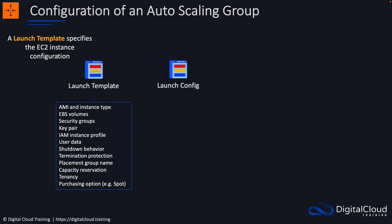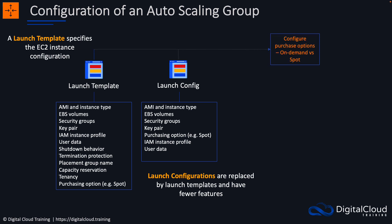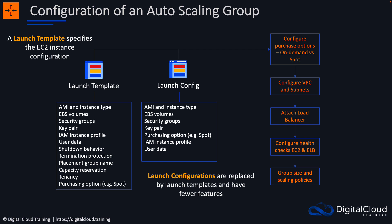We can also use something called a launch config — it's an older construct. We tend to use launch templates more because there are fewer options with a launch config. You could say that launch configs have been replaced by launch templates, though both are still available. You then configure the purchase options — whether on-demand or spot — the VPCs and subnets your auto scaling group will launch instances into, and you can optionally attach a load balancer. You can also configure health checks for EC2 as well as elastic load balancing, and define your group size and scaling policies.